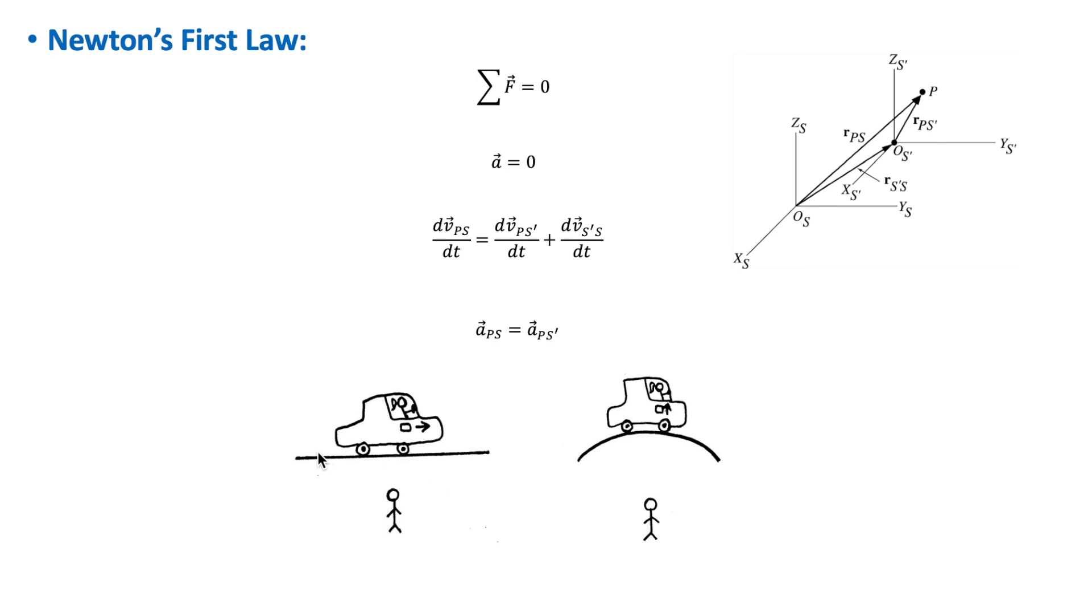Now suppose that Jill steps on the brakes. This would cause her vehicle to decelerate. Then her suitcase will start to move forward. According to Jill, who is in an accelerated frame of reference now because she is decelerating, the suitcase moved from rest even though there is no apparent net external force acting on it. It appears to Jill that the suitcase started to move by itself.